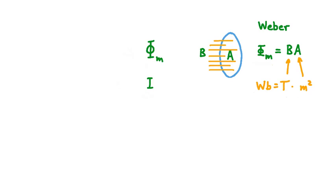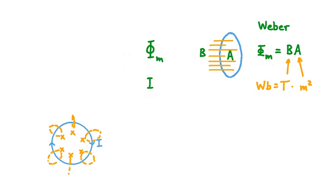Getting back to this idea that inductance involves magnetic flux and current: say we have a loop of wire carrying a current I clockwise. A current-carrying wire produces a magnetic field around itself, so this would produce a magnetic field pointing into the screen inside the loop. Combining the effects of all these magnetic field lines gives us some total magnetic field B within the area of the cross-section. In other words, we have a magnetic flux through this loop. The ratio of that magnetic flux to the current I is equal to the loop's inductance, symbolized capital L.